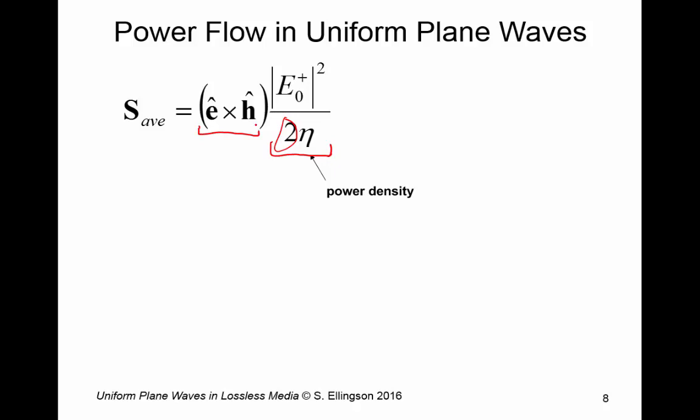The quantity E cross H gives us the direction of propagation. And what we now know is that the power flow, the direction of power flow, is in the direction of propagation. In other words, previously we've determined that E and H were both perpendicular to the direction of propagation. Relating this to the Poynting vector now tells us that the same direction is the direction of power flow.